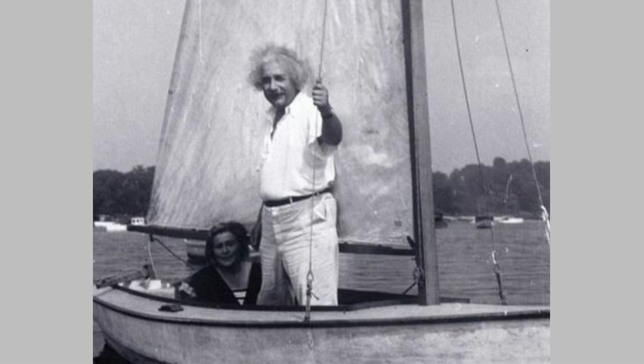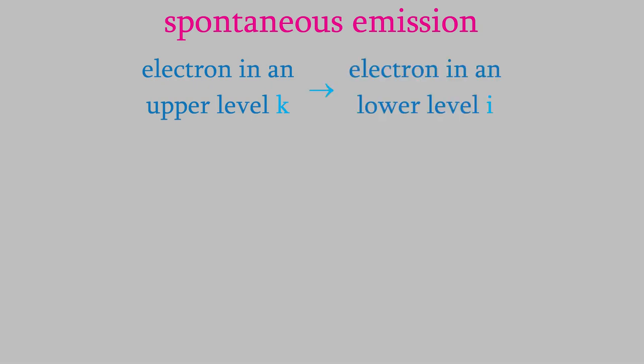For example, take spontaneous emission. We can think of this as a process similar to a chemical reaction. We begin with an electron in an upper level K, so that would be like our reactant. And as a result of the spontaneous emission, the electrons end up in a lower level I.